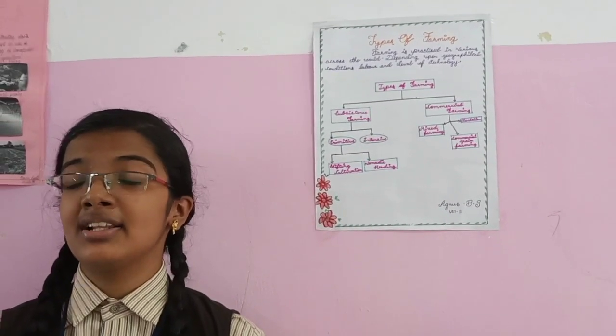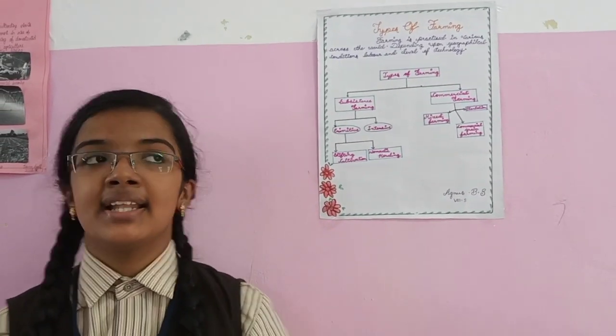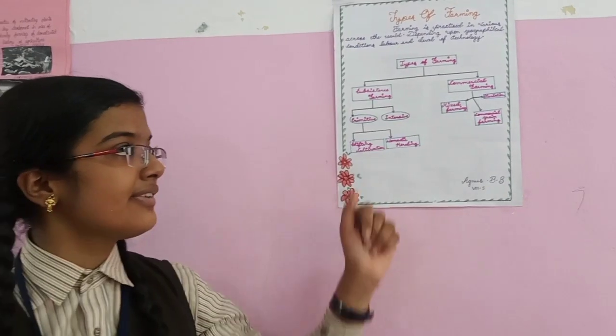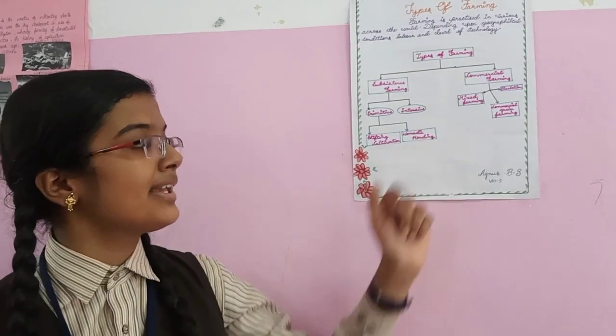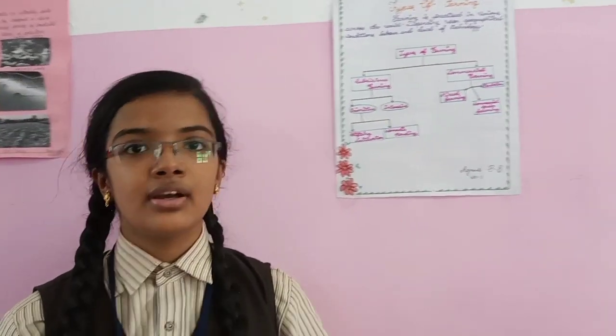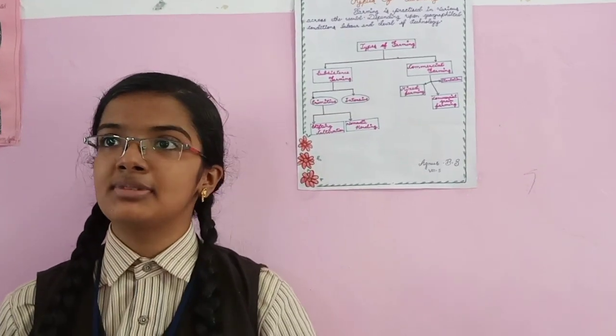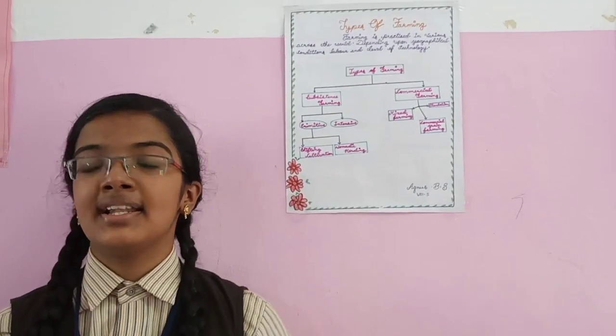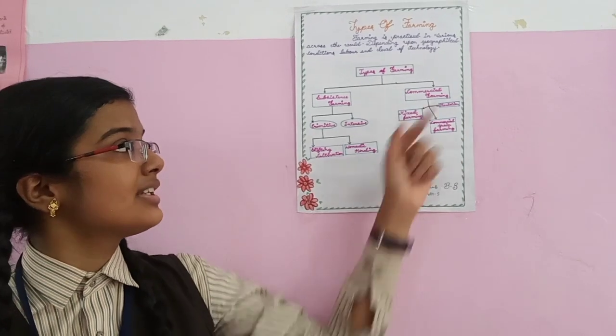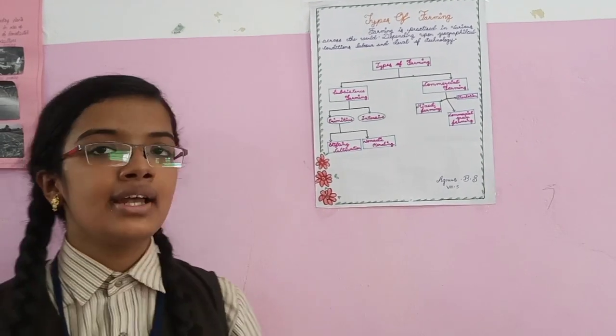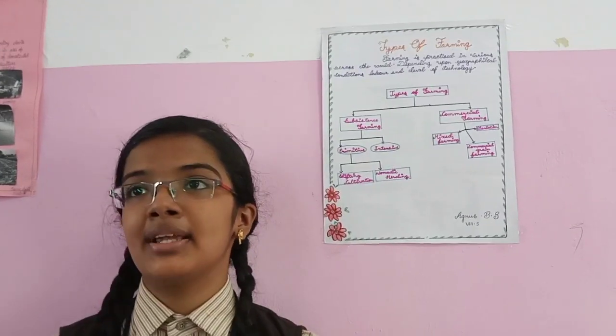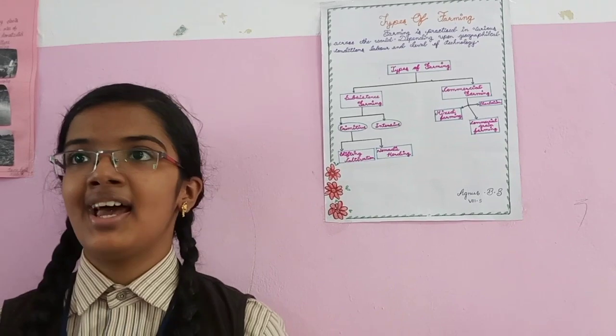Primitive subsistence is divided into two types: shifting cultivation and nomadic herding. Now moving to the second type of farming, that is commercial farming. Commercial farming can be divided into three types: mixed farming, plantation, and commercial grain farming.